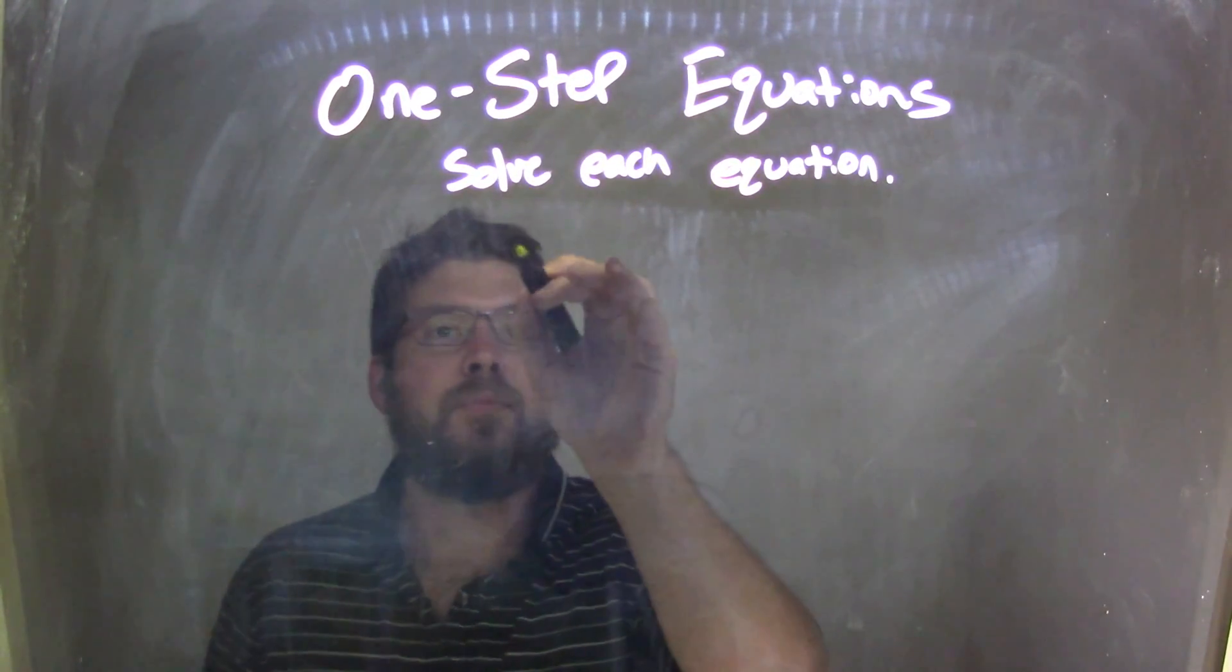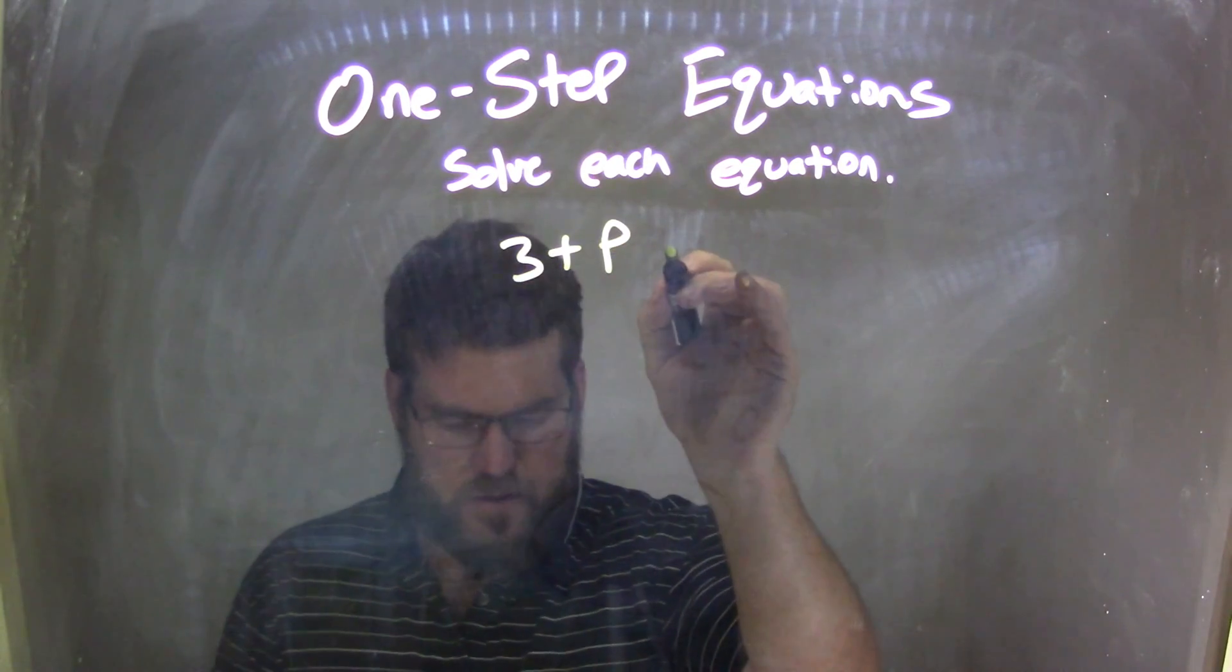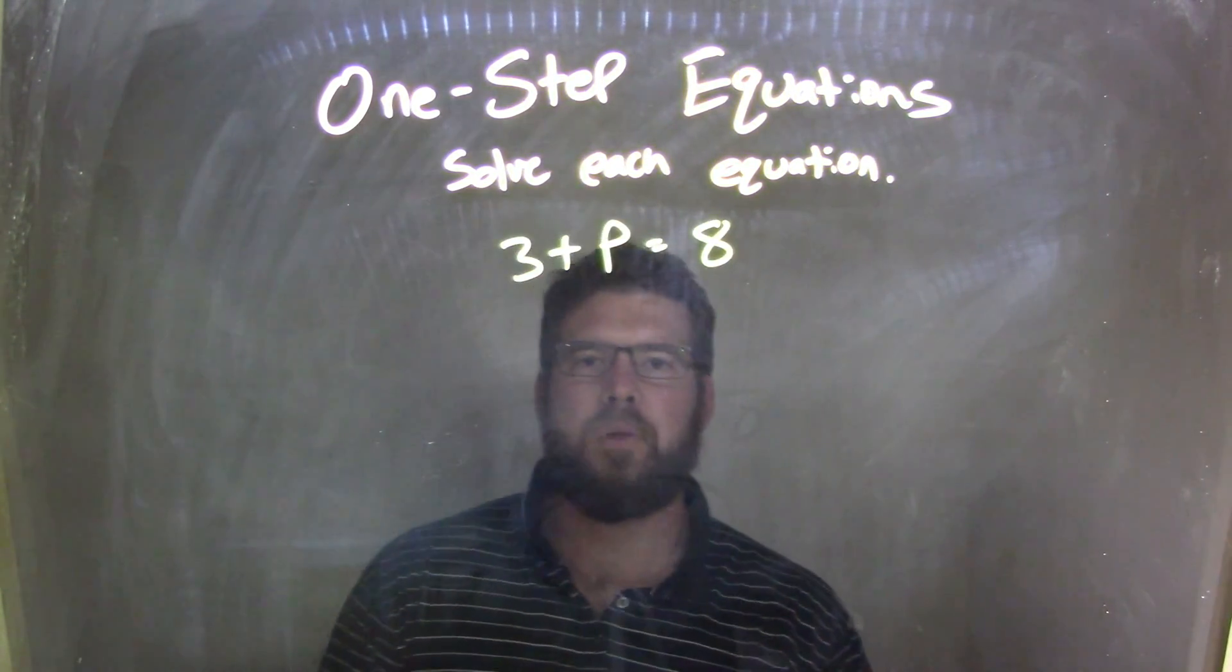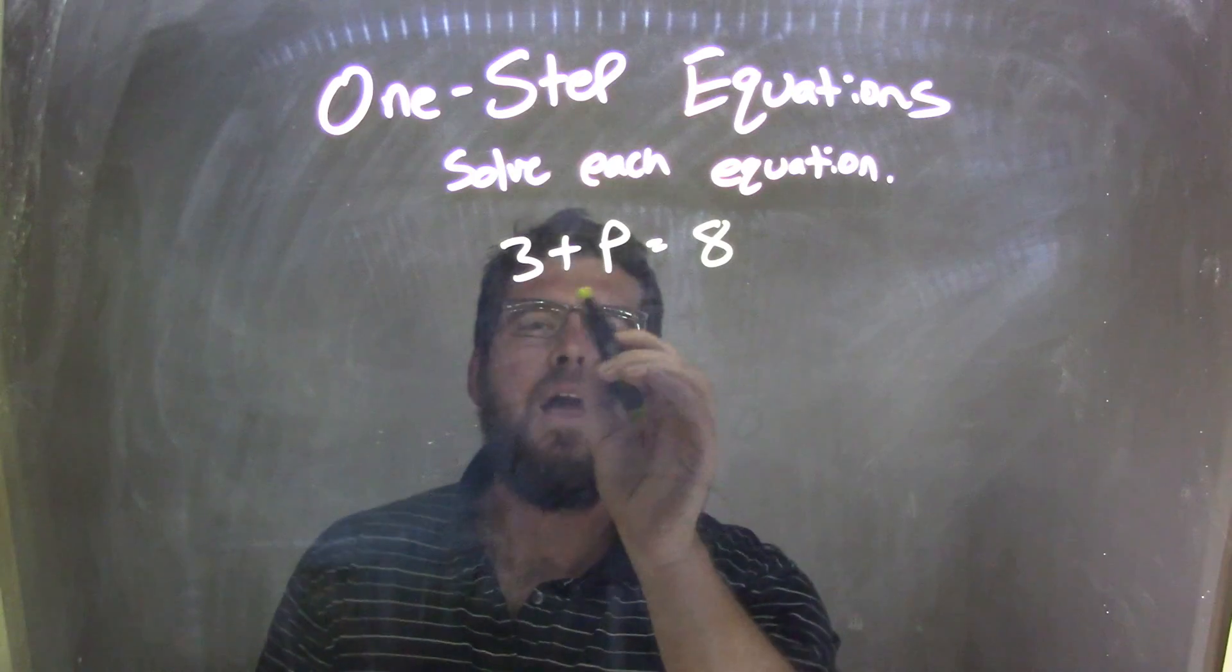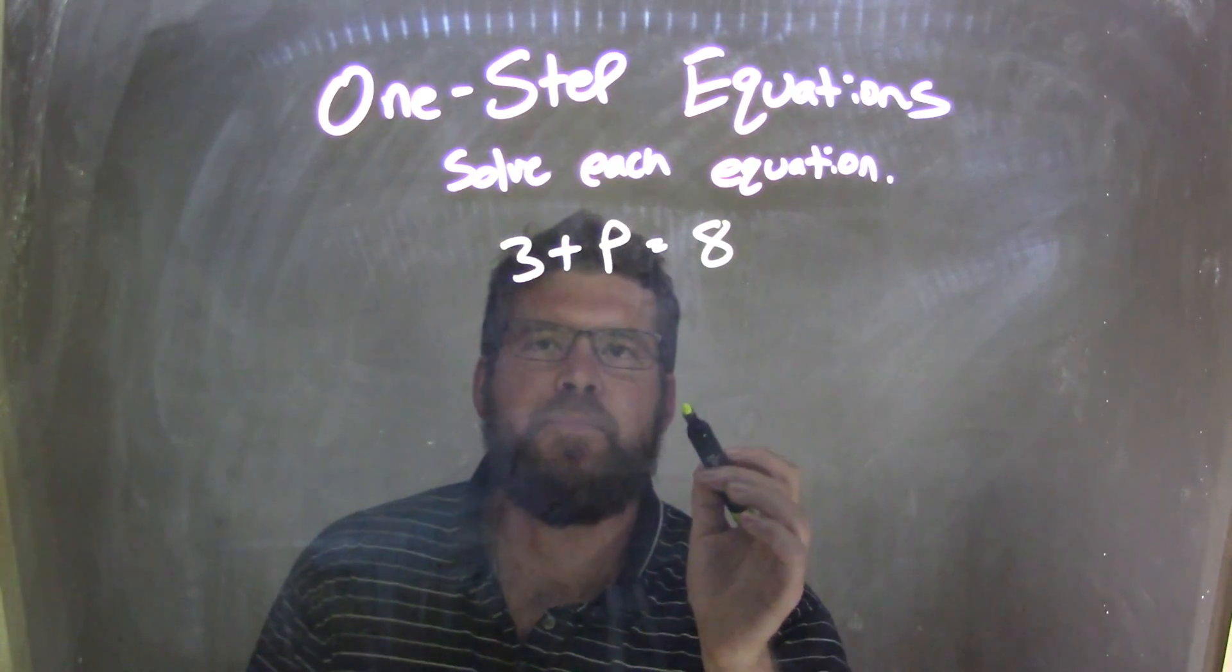So if I was given this equation, 3 plus p equals 8, I need to get p by itself.